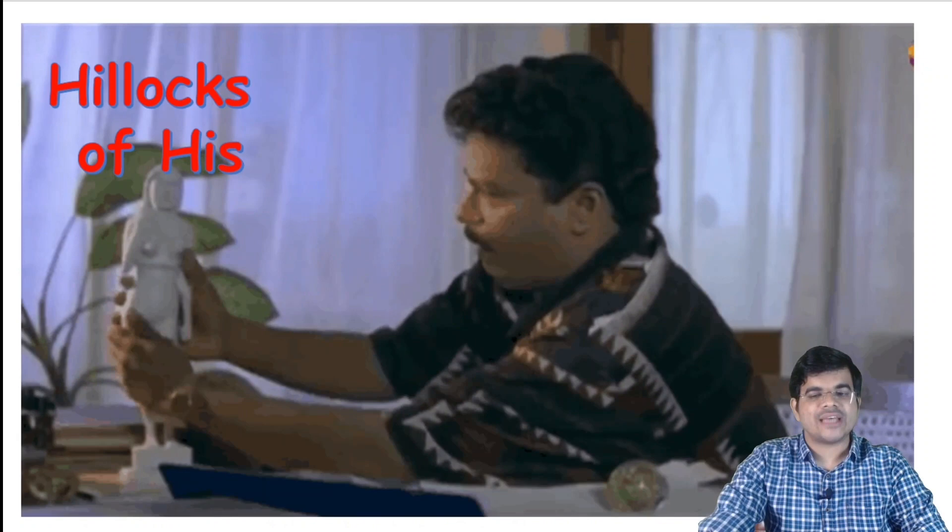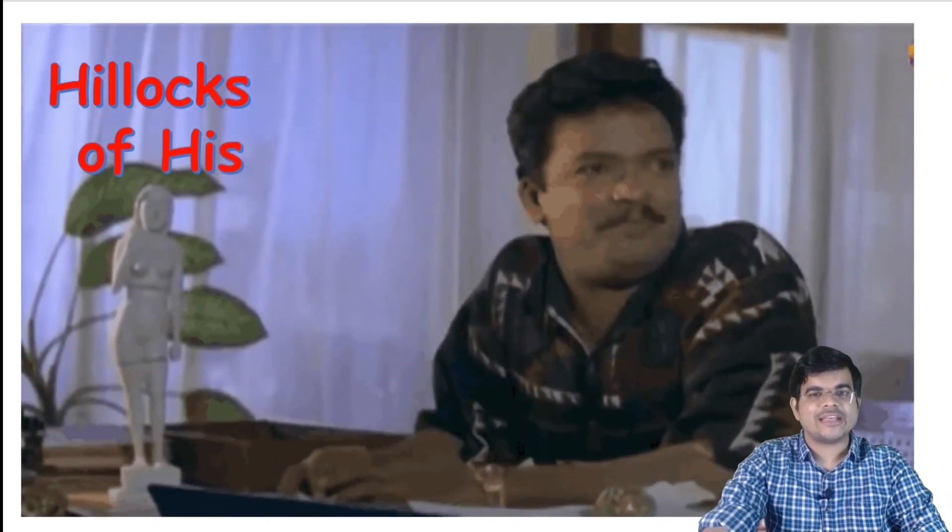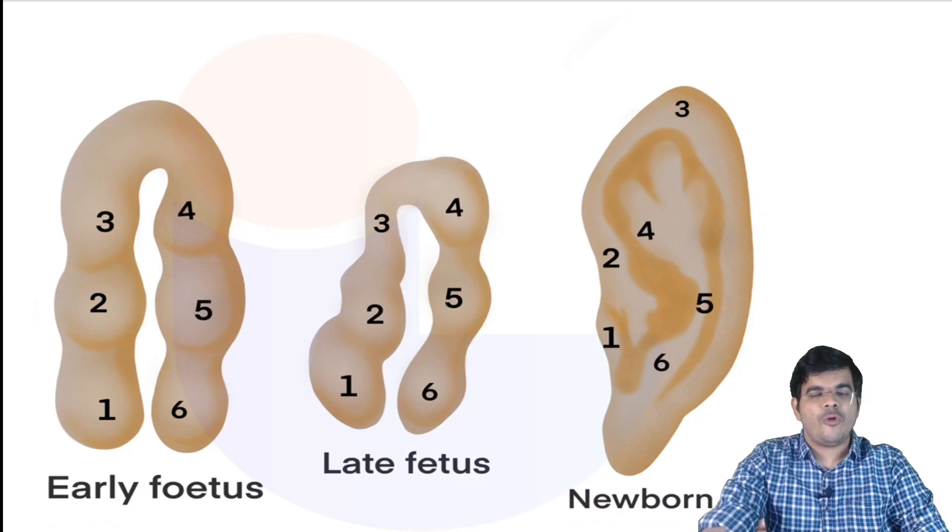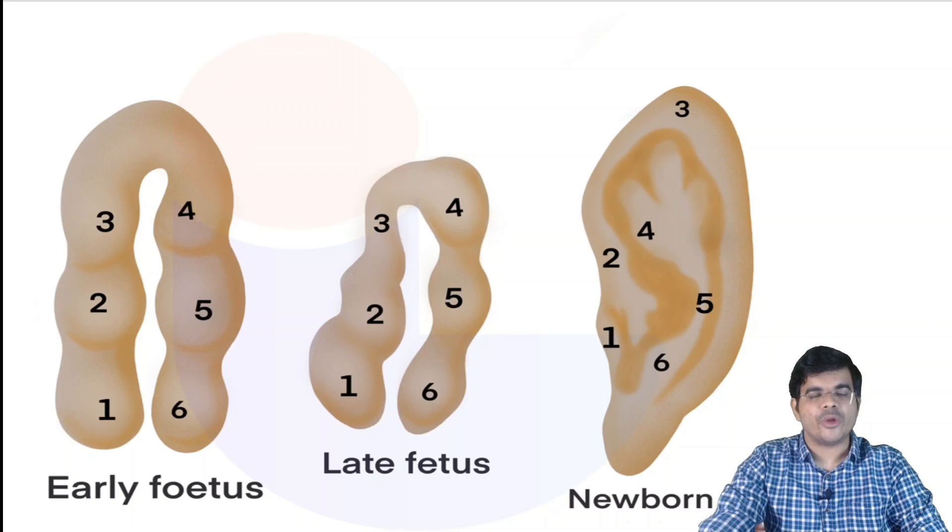The tragus and part of helix arises from the first arch and rest of the pinna arises from the second branchial arch. Faulty fusion of these hillocks of His result in formation of the preauricular sinus.